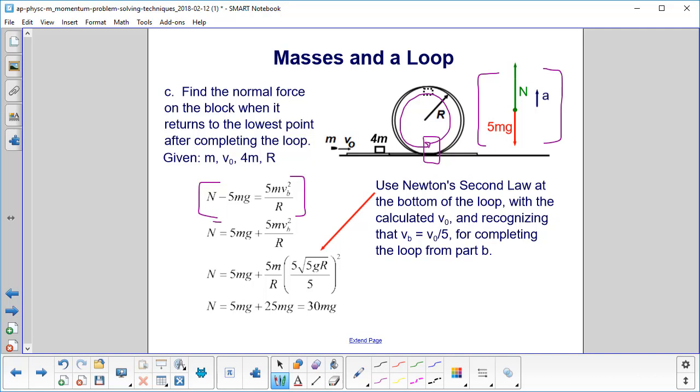And now we isolate the normal force. And we recognize what's v bottom equal to. v bottom is v0 over 5. So we substitute in our v bottom from the previous slide, which is the 5 times square root of 5gr.